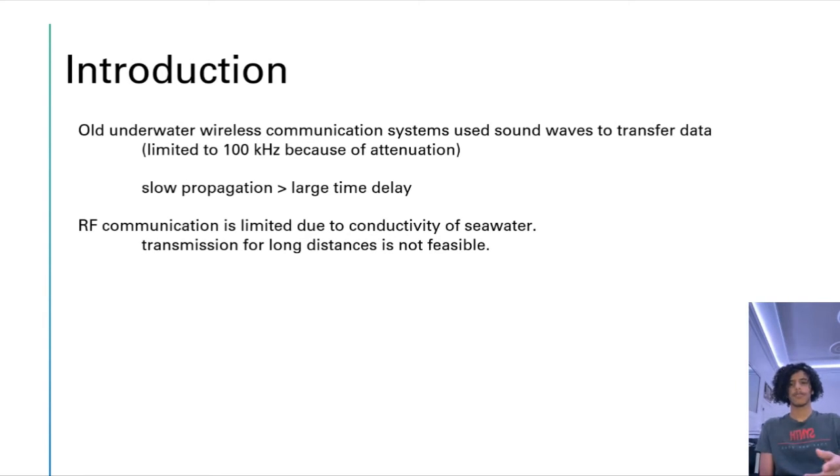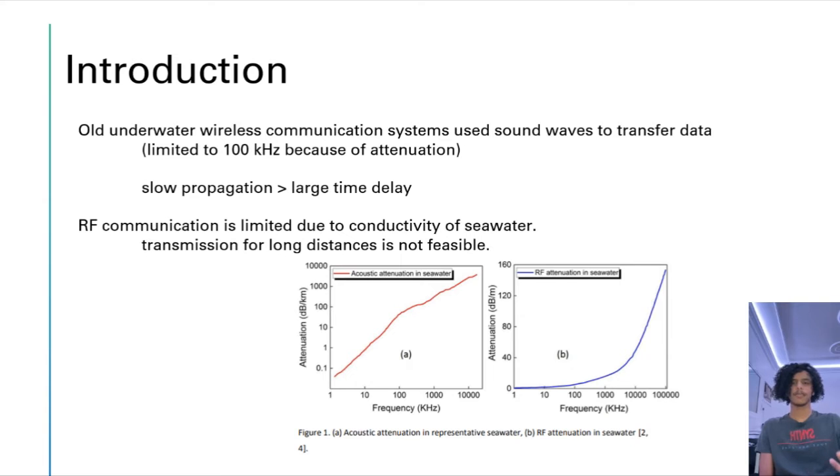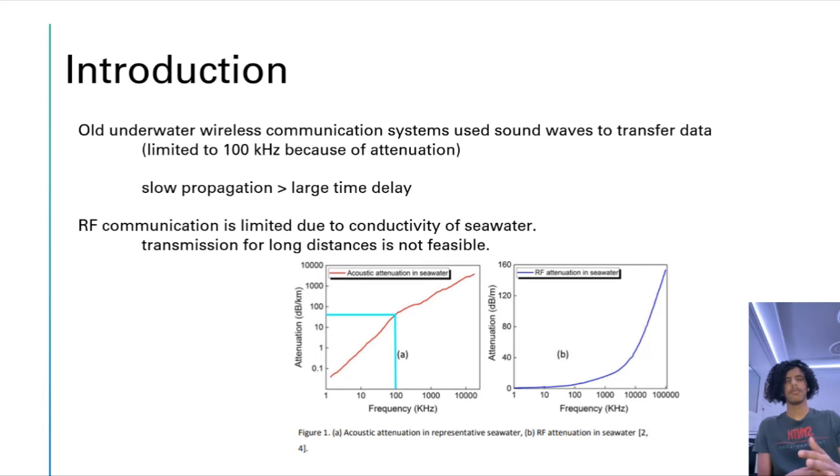This is a figure for acoustic attenuation in representative seawater and RF attenuation in seawater. We can see that for acoustic waves at 100 kHz the attenuation will be around almost 60 dB per kilometer, and for RF communication the attenuation over here is dB per meter not per kilometer as in acoustic waves.